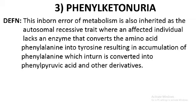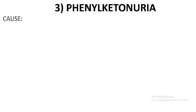In simple terms, phenylketonuria is an inborn error of metabolism or a genetic disorder. It is inherited by a child and is an autosomal recessive trait — the gene responsible is present on an autosome and is recessive. In this condition, an individual is unable to produce the enzyme phenylalanine hydroxylase, which is responsible for converting phenylalanine to tyrosine.